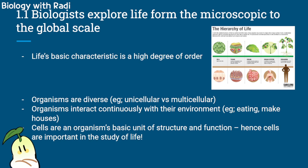Next, organisms are diverse. For example, an organism could be unicellular or multicellular. Unicellular means that the organism is made up of just one cell — this could be something like some types of bacteria. Multicellular could be something like humans, where we are made of millions and millions of cells.